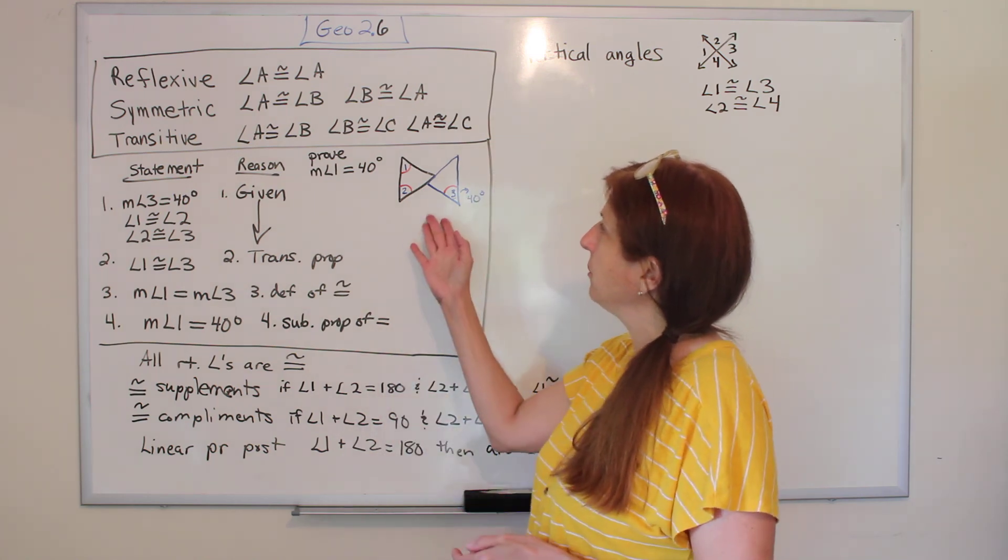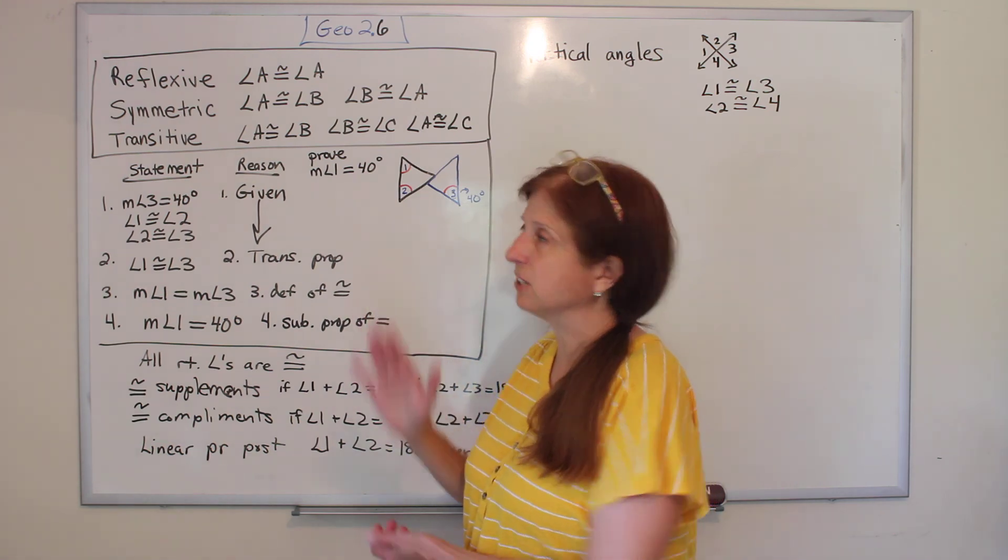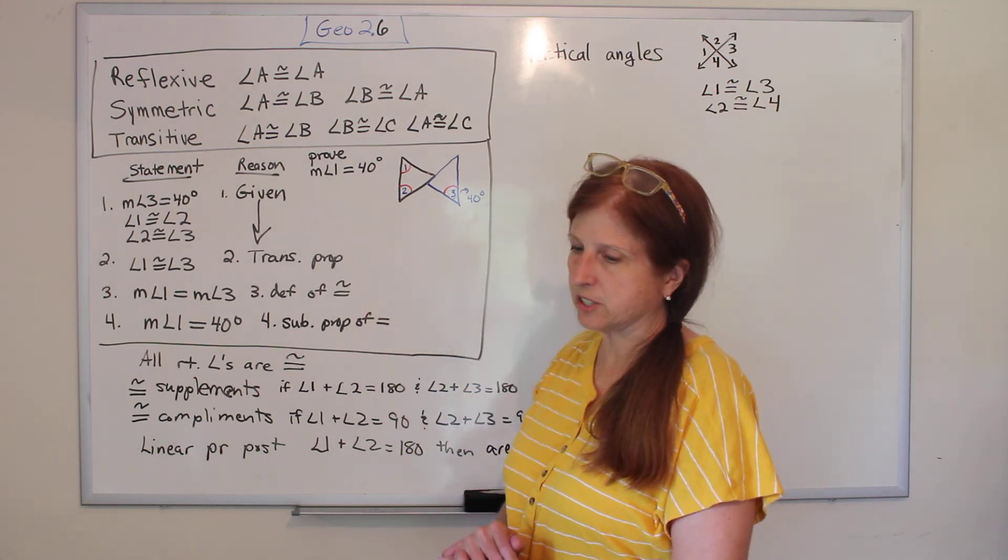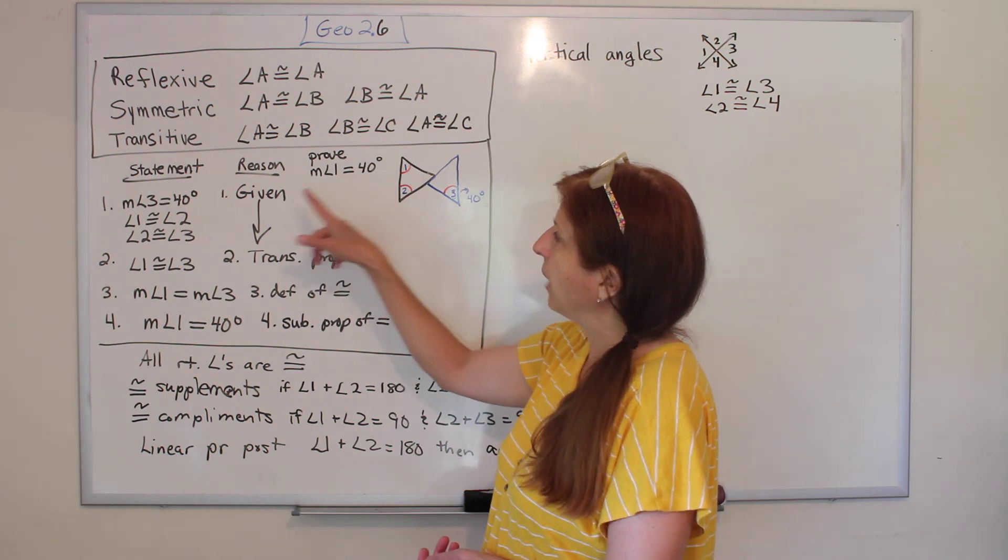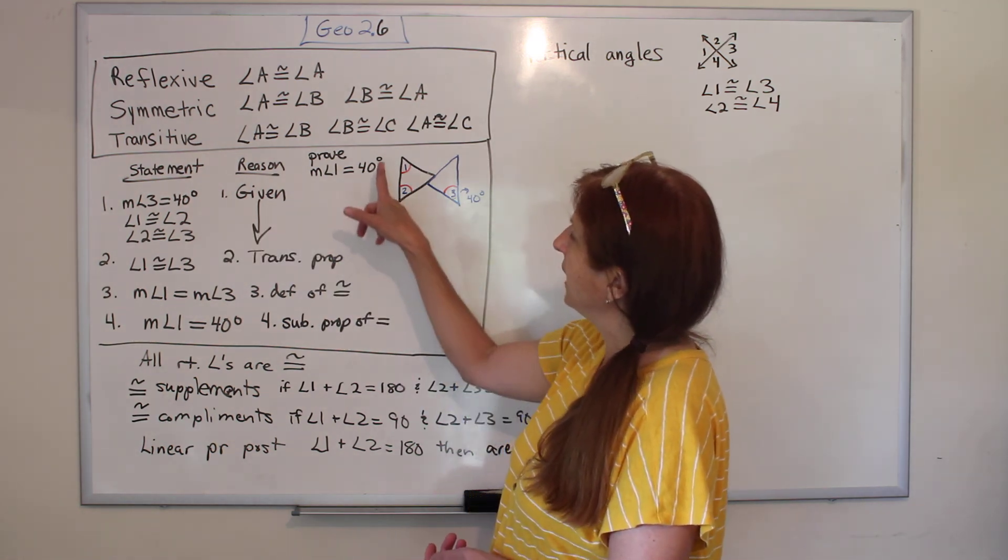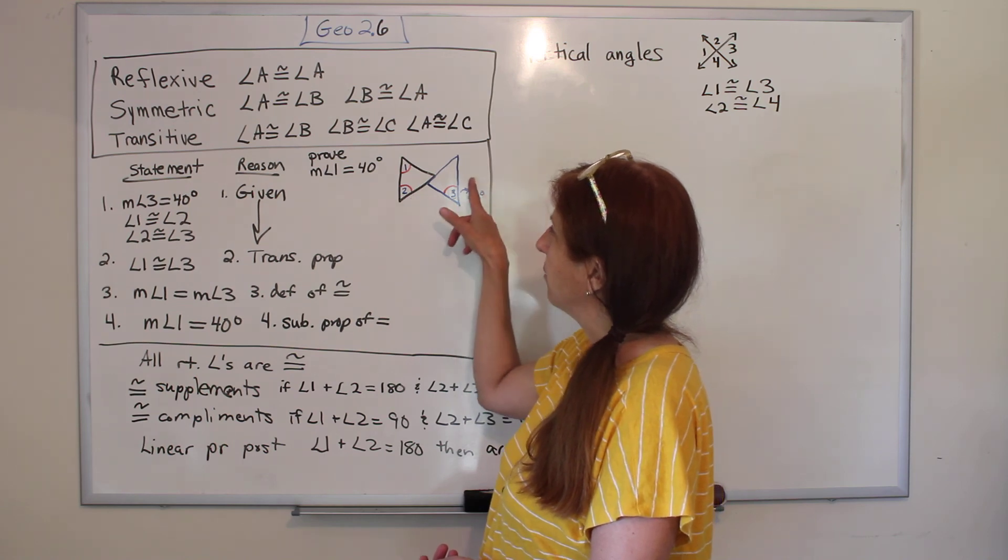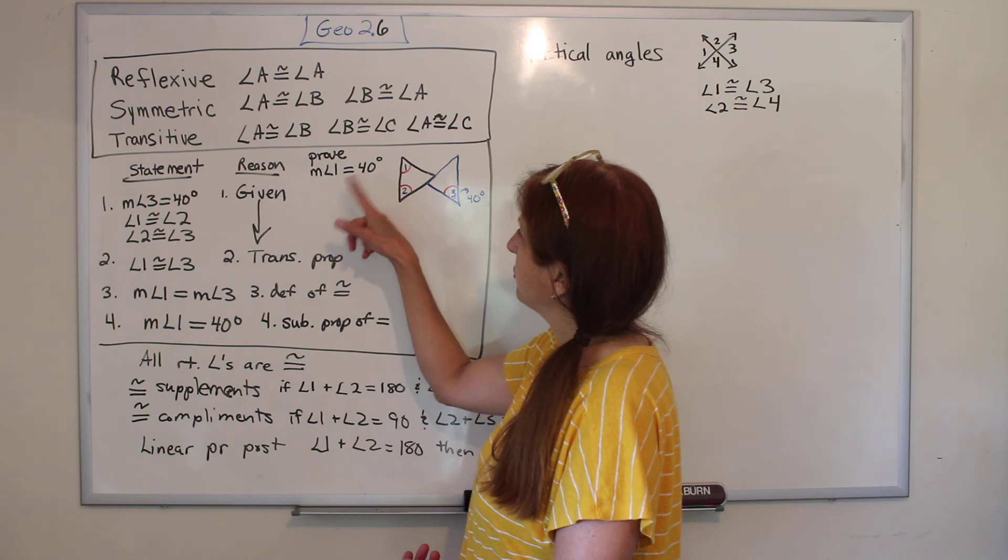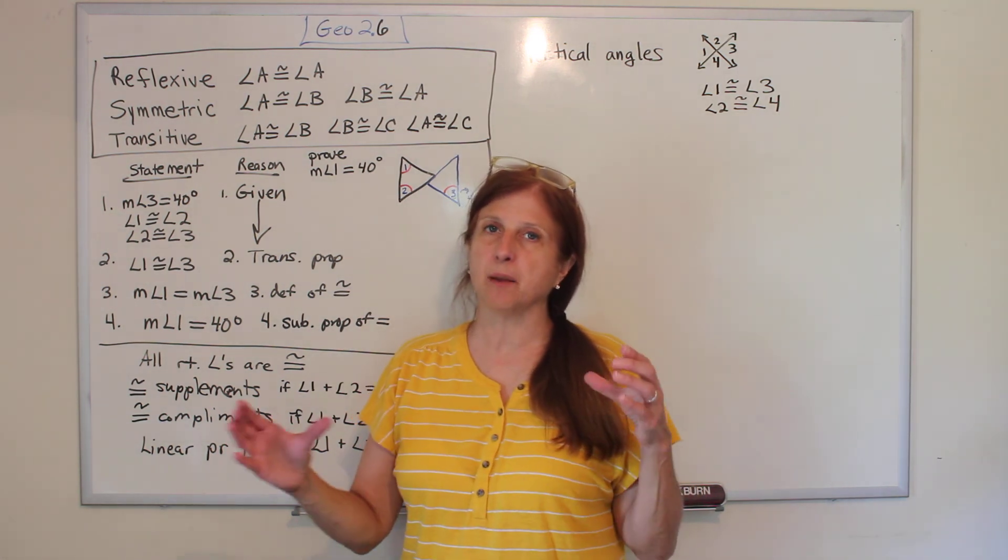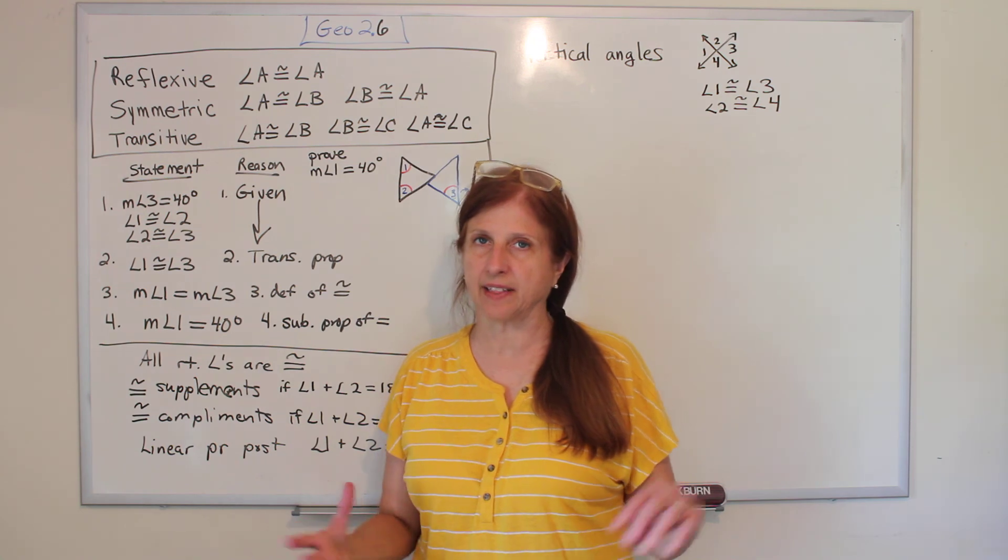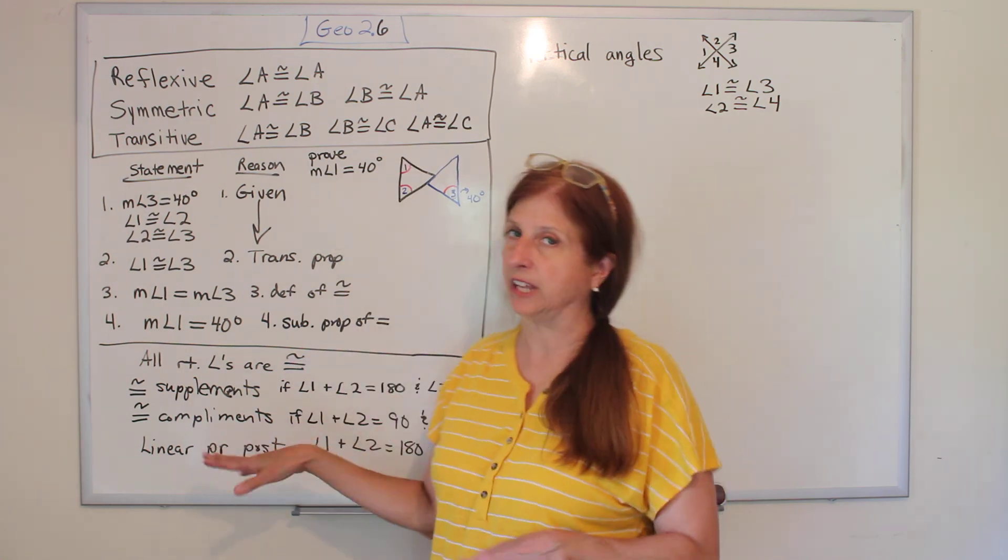Alright, so we're going to show you how we can use these, how to do a proof with angles. There are angles inside the triangles, and the proof that we're supposed to do is, they want us to prove that the measure of angle 1 is 40 degrees. We're given that the measure of angle 3 is 40 degrees, that angle 1 is congruent to angle 2, that's why there are these red lines, and that angle 2 is congruent to angle 3. Those red lines are showing those are congruent, and we're supposed to prove that the measure of angle 1 is 40 degrees. Now, a couple of little points. In our book, they spend a lot of time proving postulates and theorems and things like that. I don't really am going to bother going over those. What I want you to be able to do is a proof like this, where you're given something and you have to prove it.